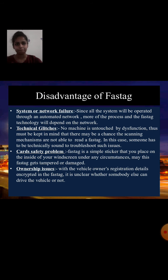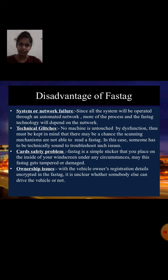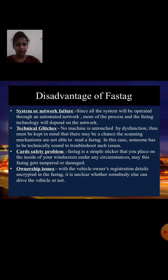Disadvantages of FASTag: First, system or network failure — since all systems are operated through an automated network, most processes and FASTag technology depend on the network. Second, card safety problems — FASTag is a simple sticker placed on the inside of a vehicle's window screen, and under any circumstances it may get tampered or damaged. Third, ownership issues — with the vehicle owner's registration details inscribed in the FASTag, it is unclear whether somebody else can drive the vehicle or not.